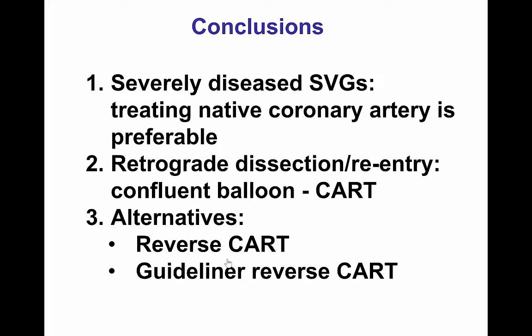This case brings up several interesting points. The first is that in patients who have very diseased vein grafts, or vein grafts with disease at sensitive locations like the distal anastomosis, it may be preferable to treat the native coronary artery if feasible, because it probably has less risk acutely as well as chronically for restenosis. It also demonstrates the value of the confluent balloon technique, which could be used here because we had a nice retrograde conduit from the vein graft, as well as the CART technique, which is not commonly used these days because reverse CART and the guideline reverse CART are the most commonly used modalities. The reason these are more commonly used is that it's easier to advance a balloon over the antegrade guide wire and use this space as a target to advance the retrograde guide wire, instead of having to advance balloons over the retrograde guide wire.